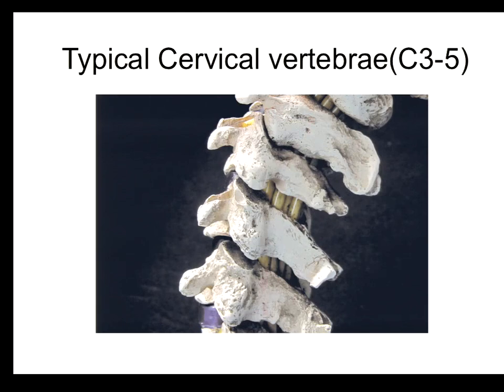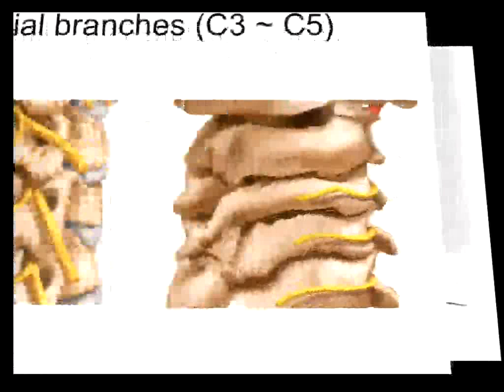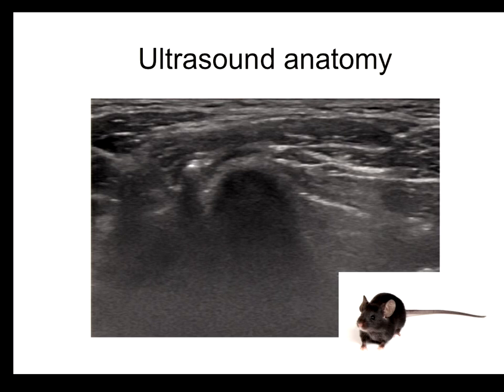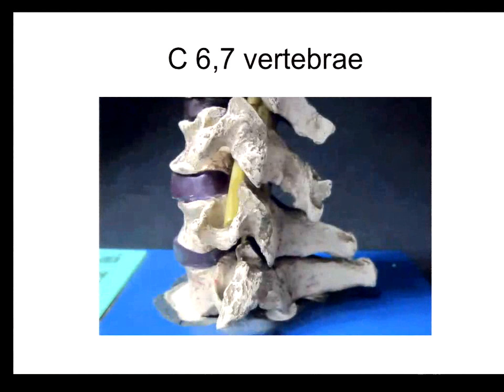Let me remind you of the most prominent landmark of the C5 articular pillar. The medial branch arises from the dorsal ramus of the nerve root, crosses over the upper edge of the posterior tubercle, and crosses over the waist of the articular pillar. This is the typical sonar anatomy with the transverse scan. You can see the prominent posterior tubercle anteriorly, then a groove, and then the hump of the articular pillar — which is the landmark for the medial branch block.